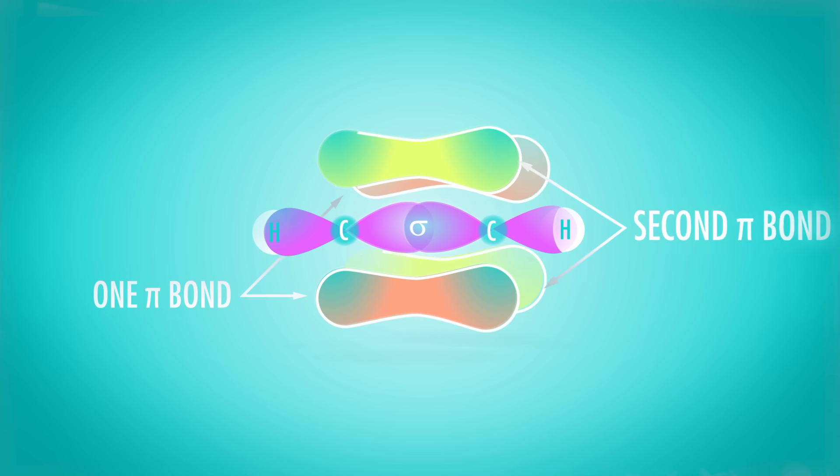And yes, sp orbitals — where the s only hybridizes with one p orbital — are also all over the place. These occur when an atom is either triple bonded to another atom, or is double bonded to two atoms. The sp orbital, the one that forms the sigma bonds here, is linear. There are just two of them. Easy — just a straight line. The trick is to have those two unhybridized p orbitals that can engage in two pi bonds, either to form a single triple bond or to form two double bonds, like in carbon dioxide.